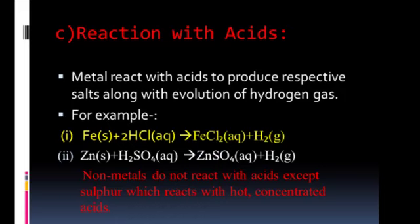For example, iron reacts with hydrochloric acid. It forms iron chloride, that is the salt of iron, and gives out hydrogen gas. And zinc reacts with sulfuric acid and forms zinc sulfate and gives out hydrogen gas. Some metals like copper and lead do not react with dilute hydrochloric acid. They react with sulfuric acid and nitric acid, but they do not liberate hydrogen gas.